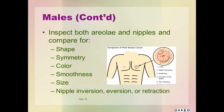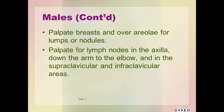Inspecting both areola and nipples, comparing for shape, symmetry, color, smoothness, size, and nipple inversion, eversion, or retraction. We should palpate the breasts and over the areola for lumps or nodules. We should palpate for lymph nodes in the axilla, down the arm to the elbow, as well as the supra and intraclavicular areas, as we did in the female.